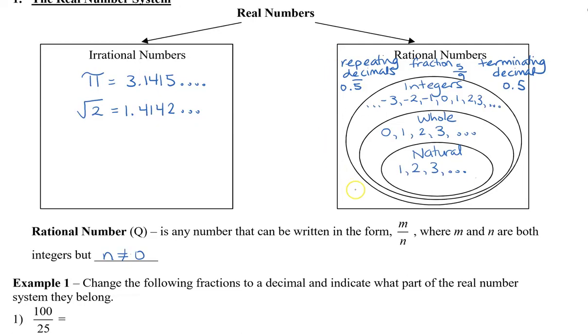So all of the numbers that are in the box on the right side can all be written as a fraction. So all the integers, the whole, and the natural can all be written as a fraction by placing a 1 in the denominator. And we know that 0.5 repeating can also be written as a half.